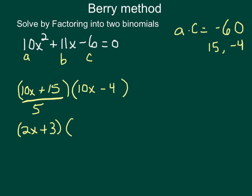And then the second one here, I look at 10x and negative 4, and I can see that a 2 will come out of there. That would yield me a 5x minus 2.